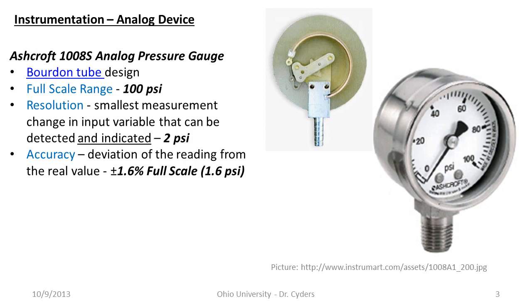Accuracy is different from resolution. The accuracy of the device is the deviation of the reading from the real value. If I put exactly 14.7 psi into this gauge, would it read 14.7 perfectly? No — there will be statistical variation from unit to unit. The manufacturer specifies accuracy on a datasheet. For the Ashcroft gauge it's 1.6% of full scale, so 1.6 psi either way. If I'm reading exactly 60 psi on my scale, the actual pressure going in is somewhere between 58.4 and 61.6 psi — standard error based on the Young's modulus of the material and other factors.